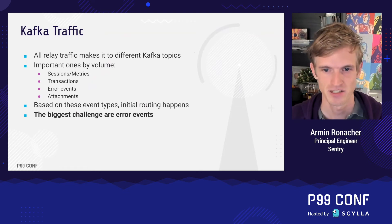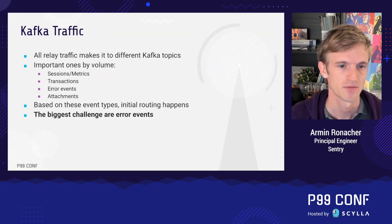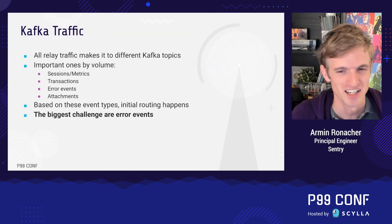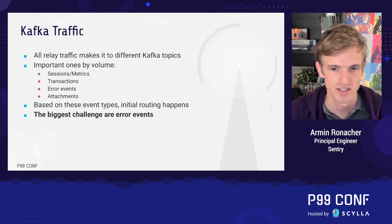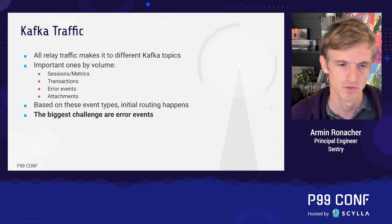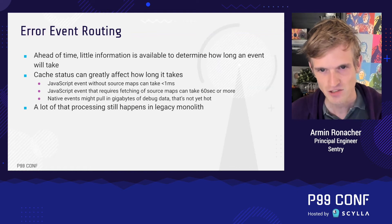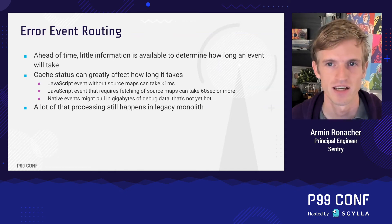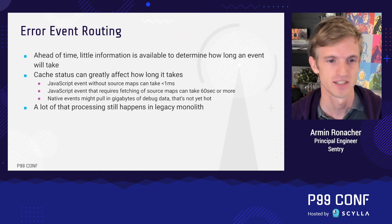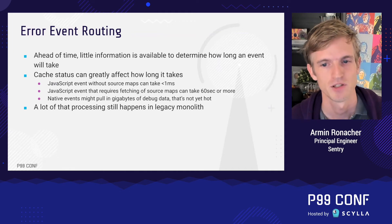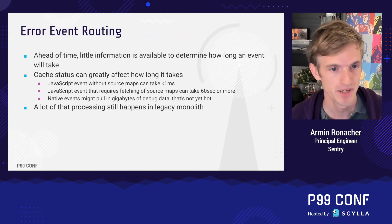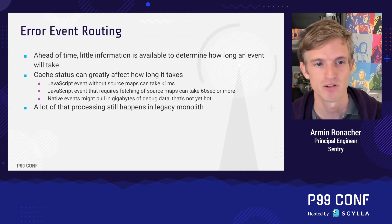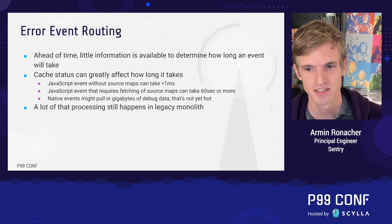Kafka traffic routing is pretty straightforward — we route based on event type into different topics. The only real challenge is error events; everything else is more or less straightforward. Error event routing is tricky because we don't have enough information in an error event to understand how long it's going to take to process. A Python event will make it through quickly since we need no special processing. A JavaScript event might go through quickly or might need source map resolution, and we don't have enough information ahead of time other than heuristics to know if we need source maps.